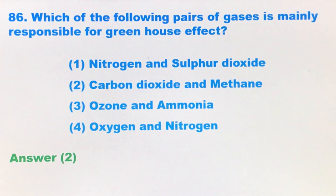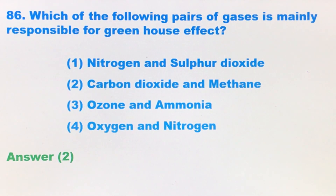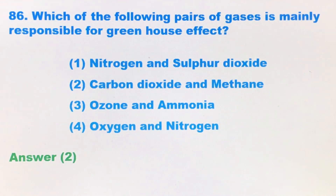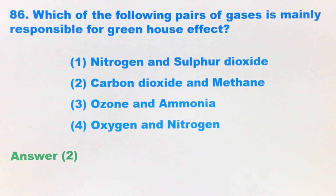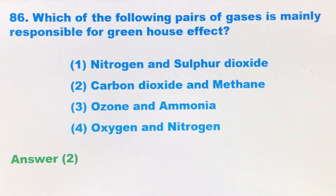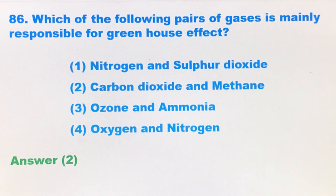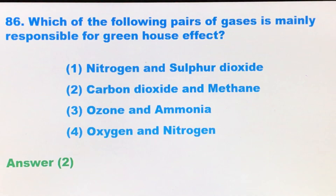The correct option is the second option: carbon dioxide and methane. Carbon dioxide and methane actually accumulate in the atmosphere and create a heat reflective layer that keeps the earth at a livable temperature. That is how carbon dioxide and methane are responsible for the greenhouse effect.